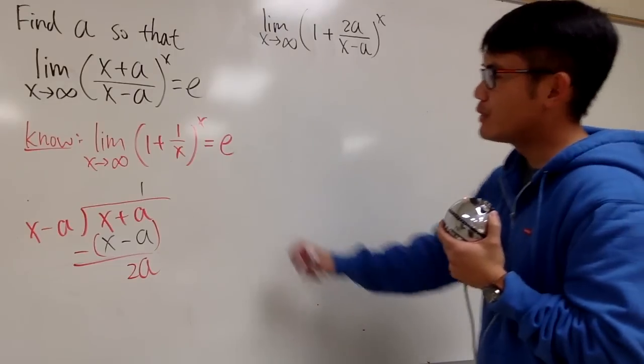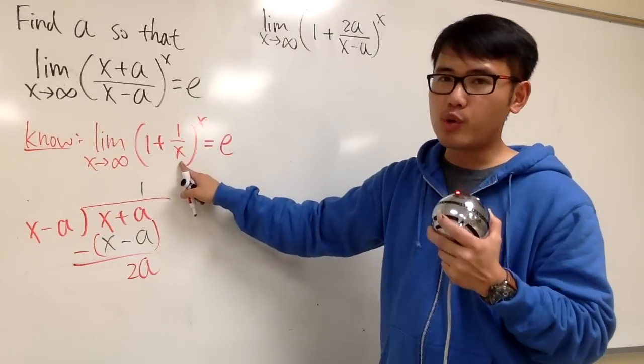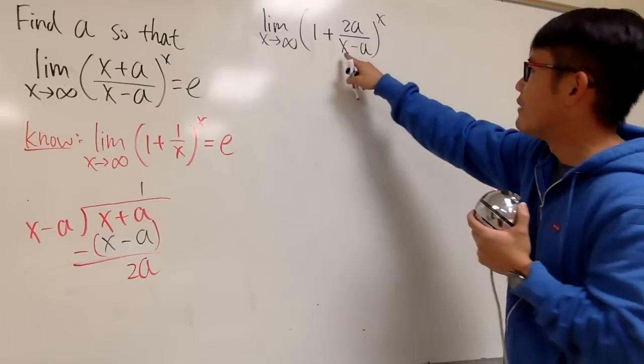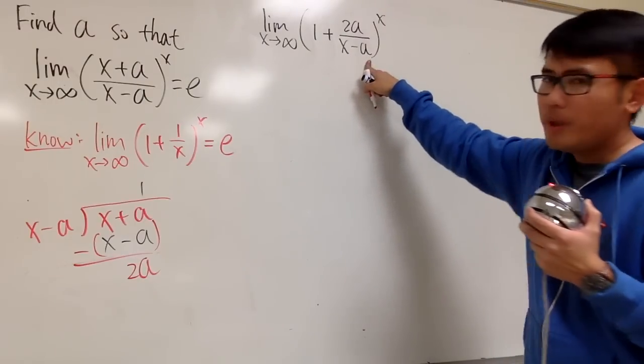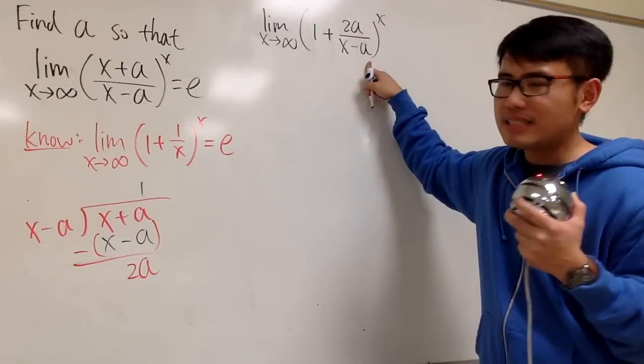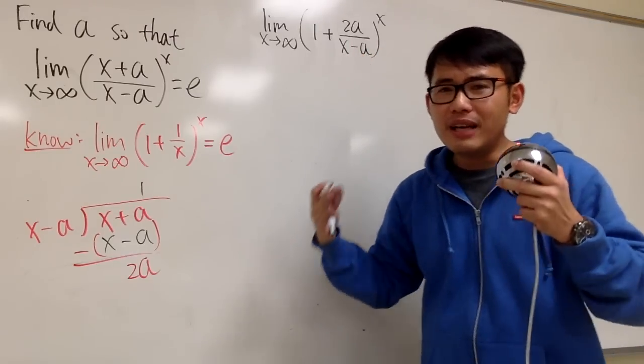But then, hmm, if you look at the famous statement here, this right here is just a variable x. But here we have x minus a. That's no good. What we can do is, wouldn't it be nice if this is just like a variable?